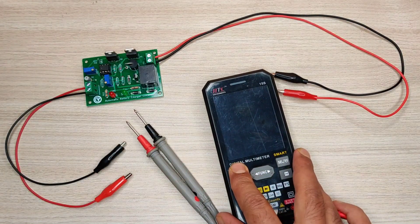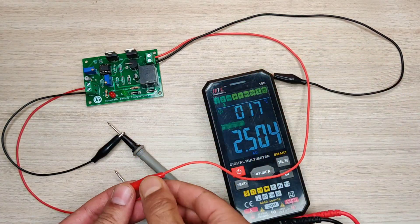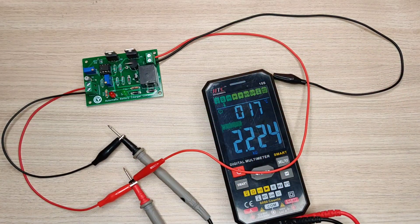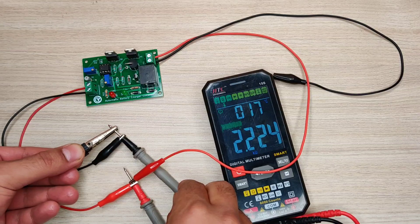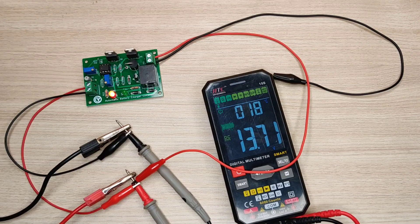I will connect the multimeter to the input of the circuit. Also connect output positive to input positive to set cutoff threshold voltage. Now connect the variable DC on input. I will set cutoff voltage at 13.8 volts.